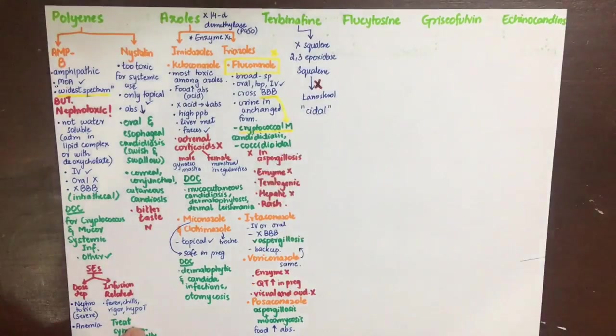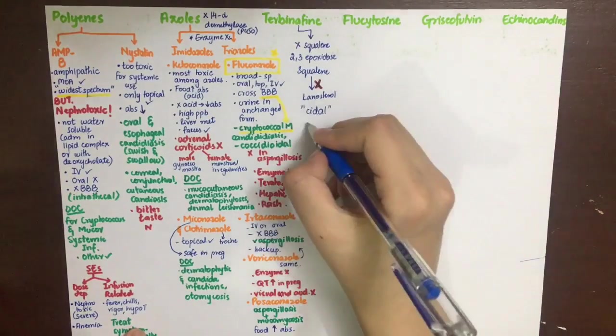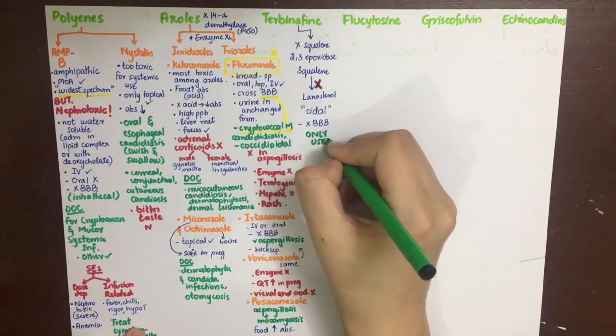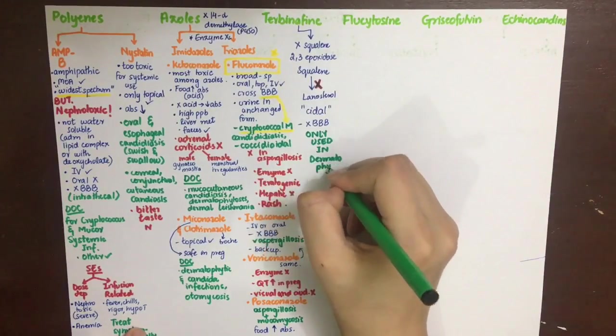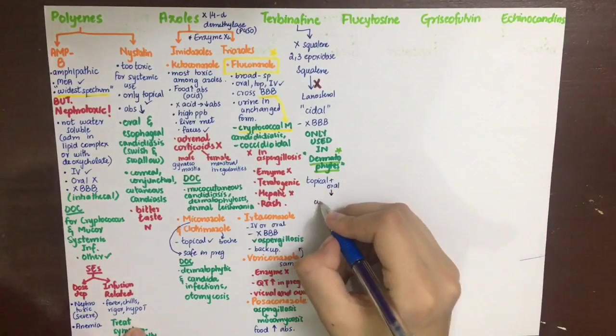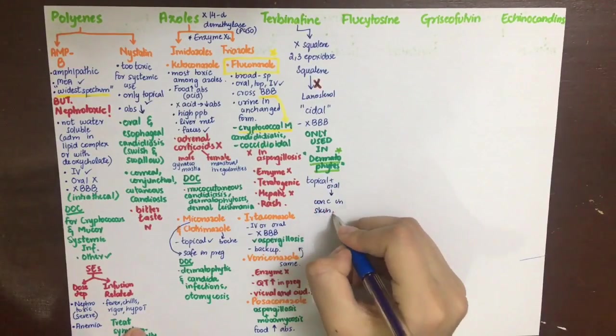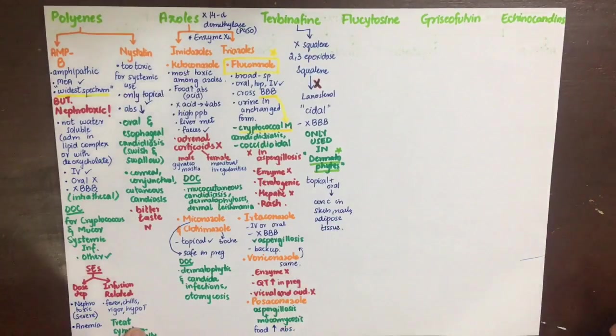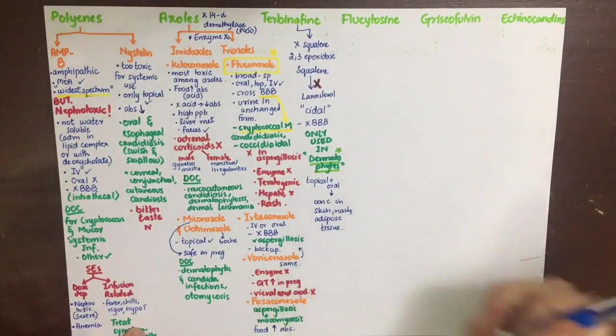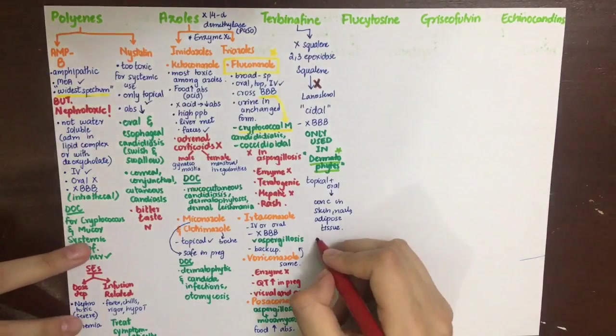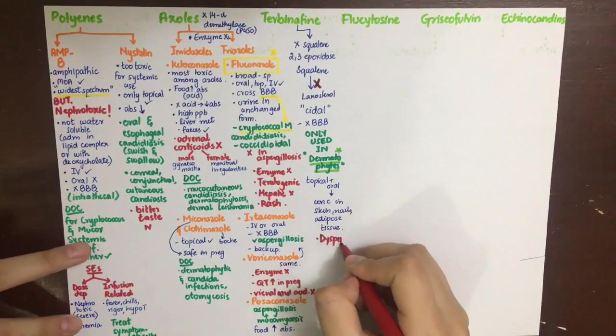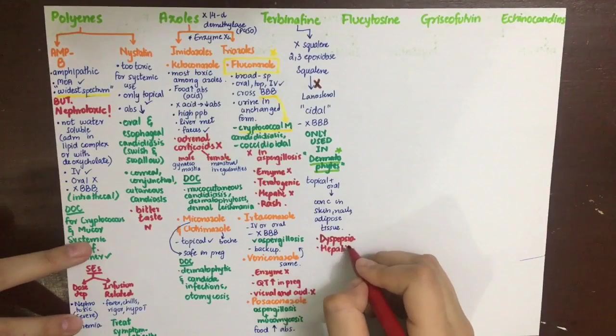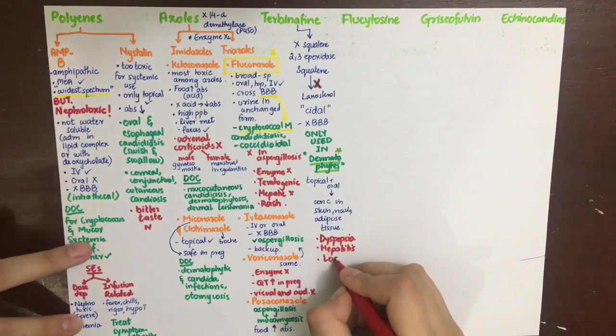Terbinafine is a cidal drug. It cannot cross the blood-brain barrier, so it is only used in dermatophytic infections. Its use can be topical as well as oral. On oral administration it reaches high concentrations in skin, nails, and adipose tissue. Side effects include dyspepsia, hepatitis, and local irritation on topical use.